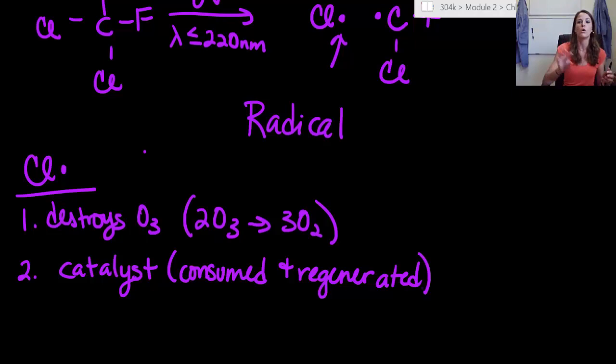So that chlorine radical runs right back to the top and breaks apart more ozone molecules over and over and over again, just one. And it turns out that one chlorine radical, just one, can destroy, I'm using the word destroy again, 100,000 ozone molecules.